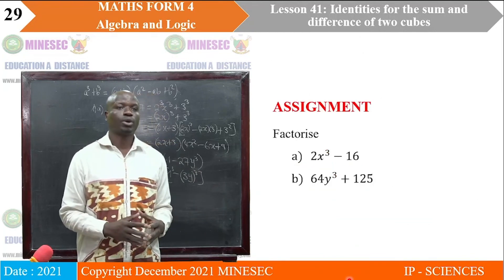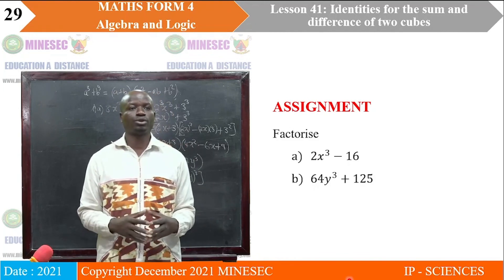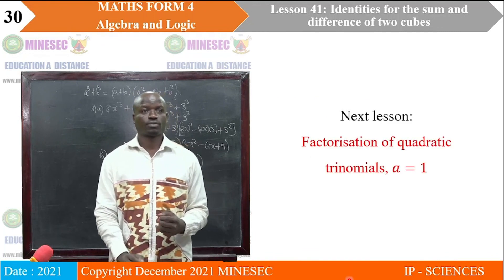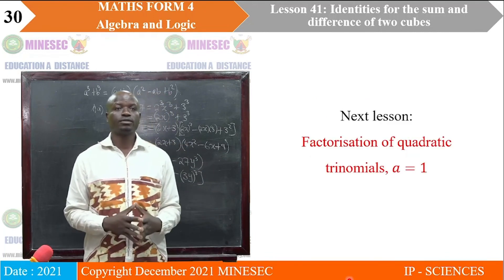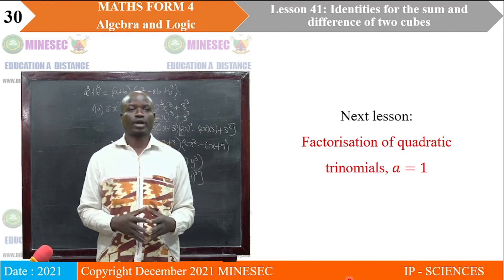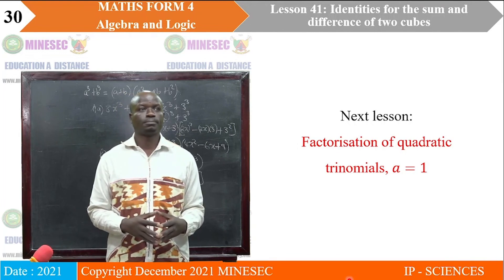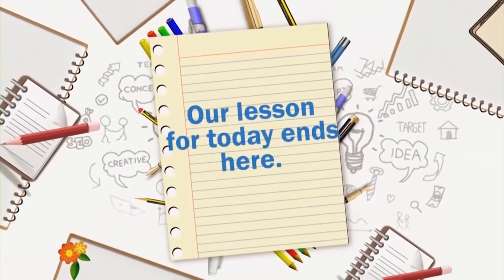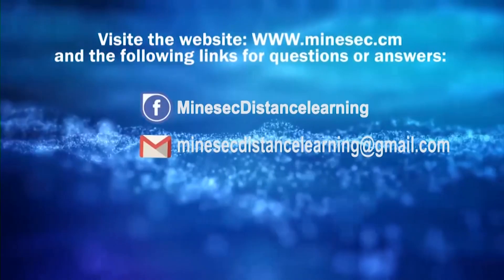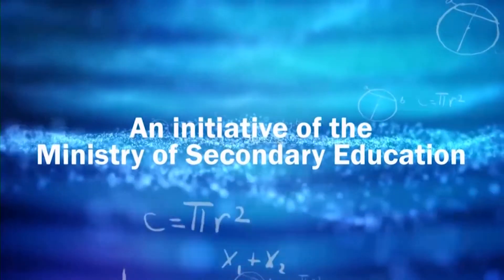To end the lesson, here is an assignment that you should copy and do later. We will look at the correction in the next lesson. That brings us to the end of the lesson. In the next lesson, we will be looking at factorization of quadratic trinomials where A is equal to 1. Thank you.